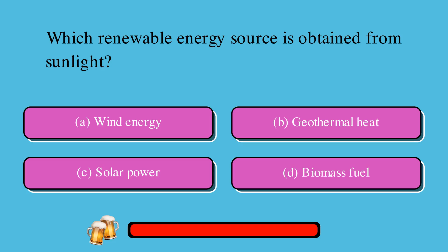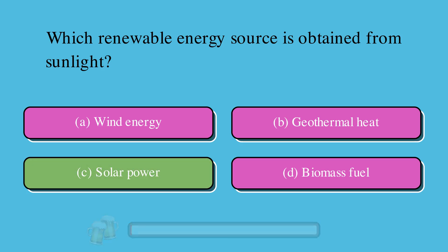Which renewable energy source is obtained from sunlight? A. Wind energy, B. Geothermal heat, C. Solar power, or D. Biomass fuel? The correct answer is C. Solar power.